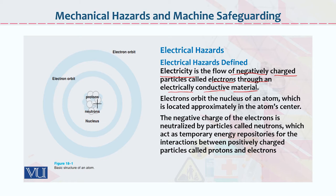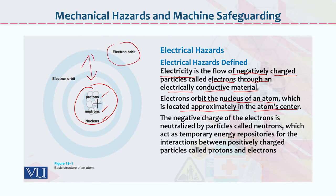Electrons orbit the nucleus of an atom, which is located approximately in the atom center. The atom consists of protons, neutrons in the nucleus, and the remaining aspect is that electrons orbit and move around it.